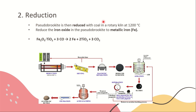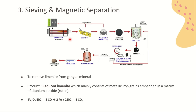In oxidation, a typical feed made up of synthetic rutile and rutile is heated in a rotary kiln with air. This oxidizes the iron content in ilmenite to iron oxide. In the reduction step, the ilmenite is then reduced with coal in a rotary kiln at 1,100 to 1,200 degrees Celsius. This reduces the iron oxide to metallic iron (Fe).